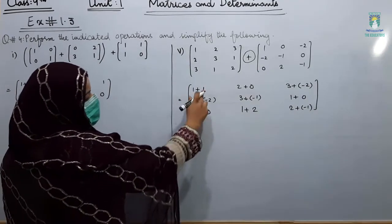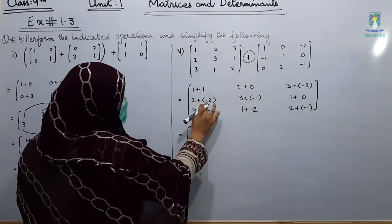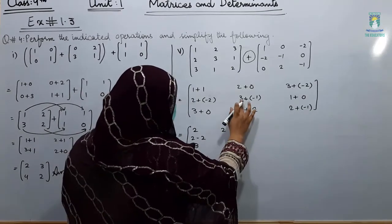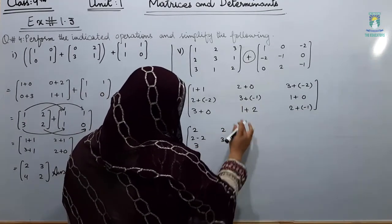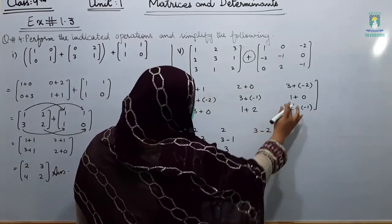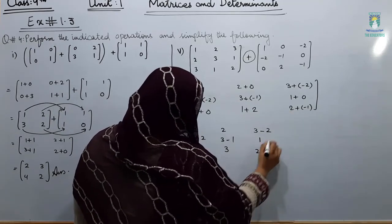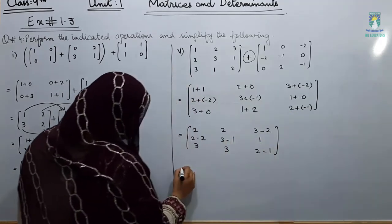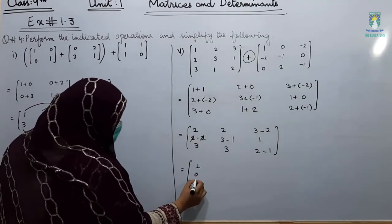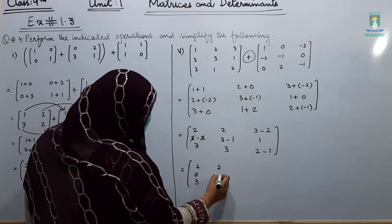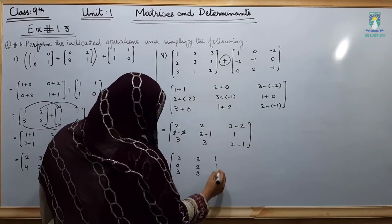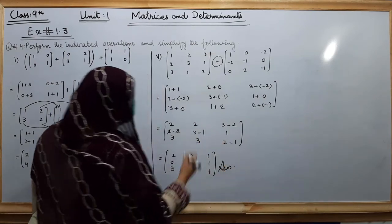Now: 1 plus 1 is 2; 2 plus minus 2 gives 0; 3 plus 0 is 3; 2 plus 0 is 2; 3 plus minus 1 gives 2; 1 plus 2 is 3; 3 plus minus 2 gives 1; 1 plus 0 is 1; 2 plus minus 1 gives 1. This is your answer: [2, 0; 3, 2; 2, 3; 1, 1; 1].